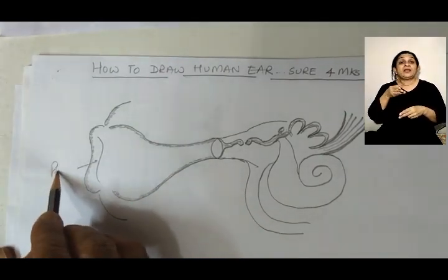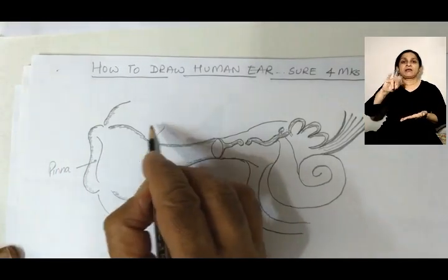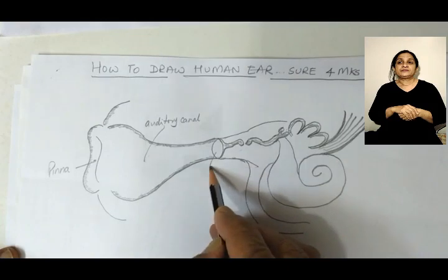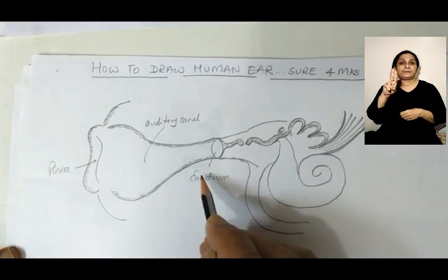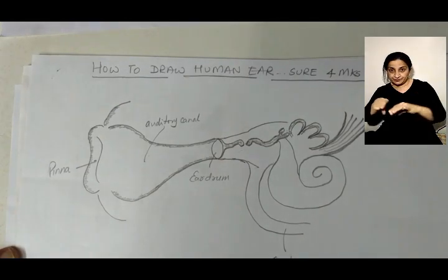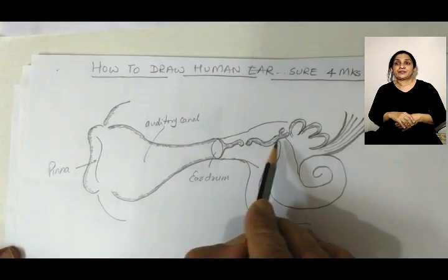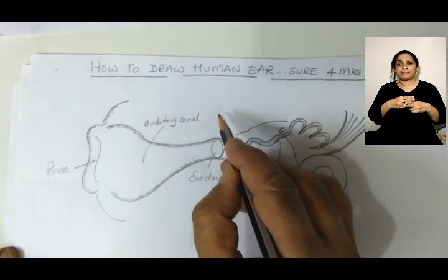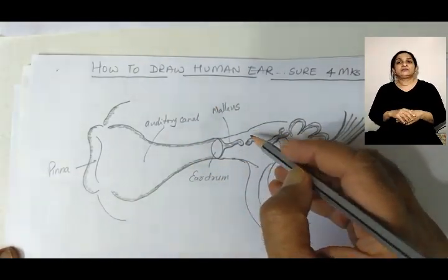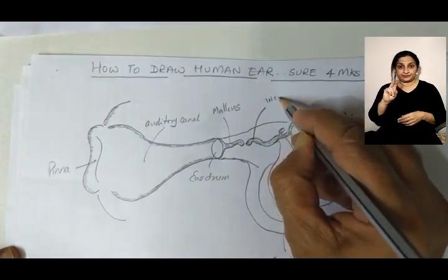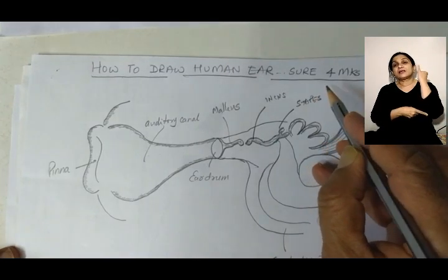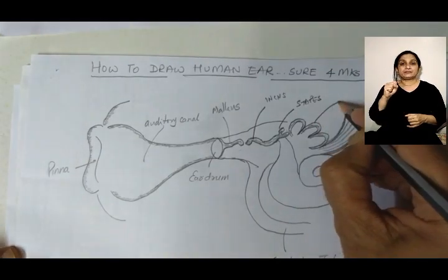Now label the parts: this is the pinna, this is the auditory canal, this is the eardrum, Eustachian tube — note the spelling. These three bones you need to name: this is the malleus, the hammer bone; the second one is the incus; the third one is the stapes. Remember the other names also for these. These are the semicircular canals.